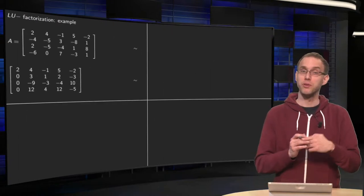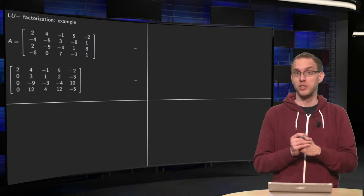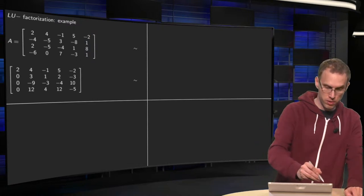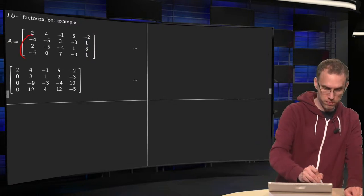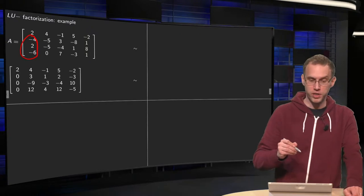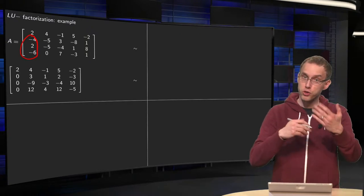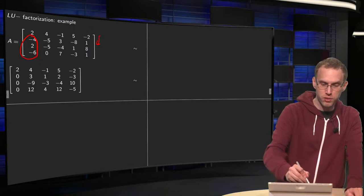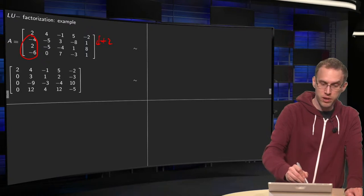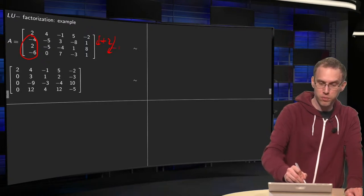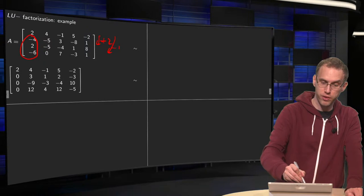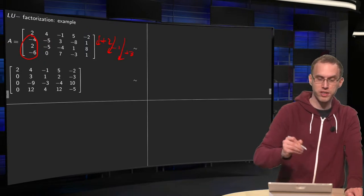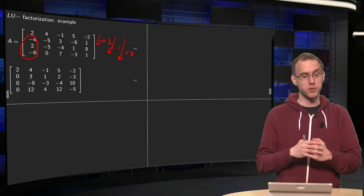What are we going to do? First, we will have to reduce A to echelon form. We want to have zeros here. We can only use row additions; we don't want to use swaps or multiplication. We add the first row twice to the second row, subtract the first row once from the third row, and add the first row three times to the last row.